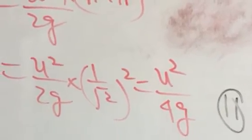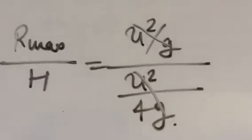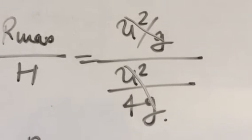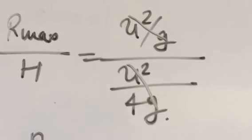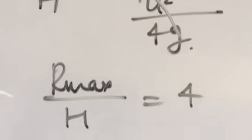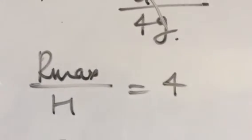And equation second, a height H equal to u square upon 4g. What we find, R maximum upon H, u square upon g, divided by u square by 4g, u square by g gets cancelled, R maximum upon H equal to 4.